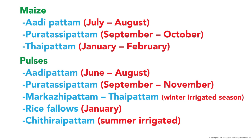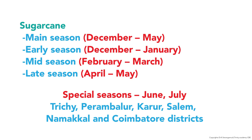Maize seasons in Tamil Nadu are July–August, September–October, and January–February. There are three main seasons for pulses in Tamil Nadu, called Adipattam, Protosipattam, and Thai Pattam. Adipattam is June–August; Protosipattam is September–November; Margazhi Pattam/Thai Pattam is the winter irrigated season during January; and Chittarai Pattam is the summer irrigated season.